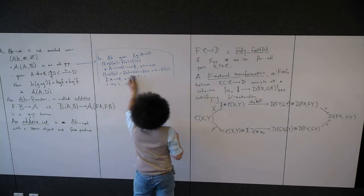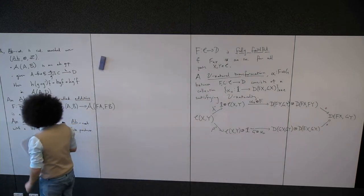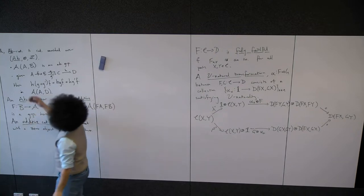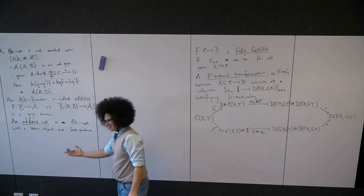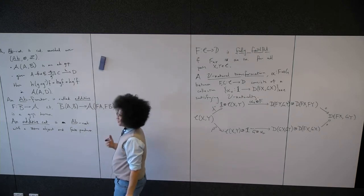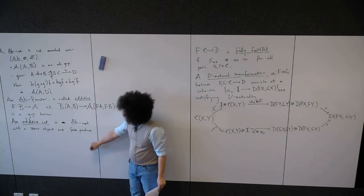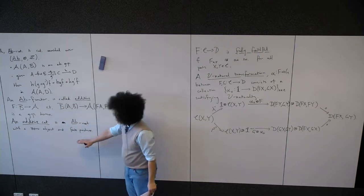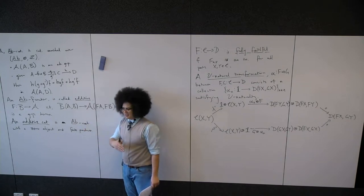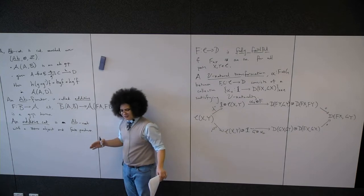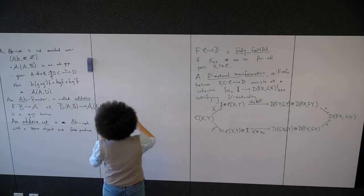For example, vector spaces are enriched over Ab — vector spaces have an underlying Ab structure, and are enriched over themselves, so by being enriched over themselves they're enriched over Ab. Vector spaces over some field have a zero object (the trivial vector space) and all finite products. In fact, finite direct sums of vector spaces are the same as finite products of vector spaces, but in the infinite case that's not true.